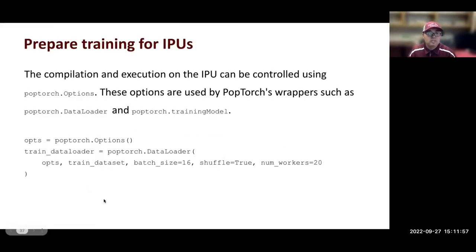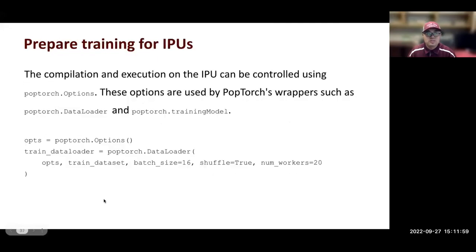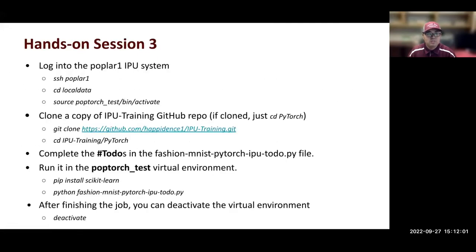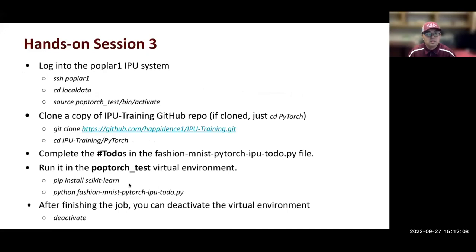Specify the optimizer — poptorch.optim inherits PyTorch optimization algorithms like SGD and Adam. Use SGD with model parameters, learning rate, and momentum. Wrap the model with poptorch.trainingModel, passing model, options, and optimizer. Run 30 epochs. When done, detach the model from the IPU device using model.detachFromDevice() so other processes like inference can use the same IPU. Save the model, then call model.eval() and wrap with poptorch.inferenceModel — passing model and options but no optimizer — for inference.